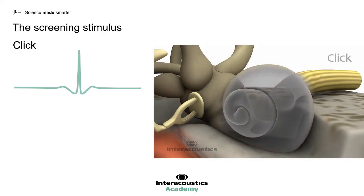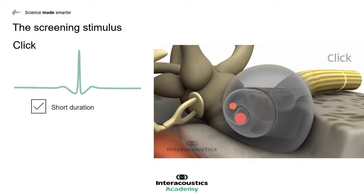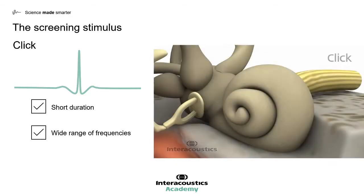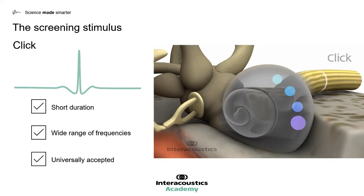Traditionally, in screening automated ABR protocols, a click stimulus has been used. The click stimulus is, of course, the most famous stimulus used in Evoked Potentials testing. We know that it's a short duration signal, and it contains a wide range of frequencies. It is universally accepted, with plenty of research in the literature supporting its use.